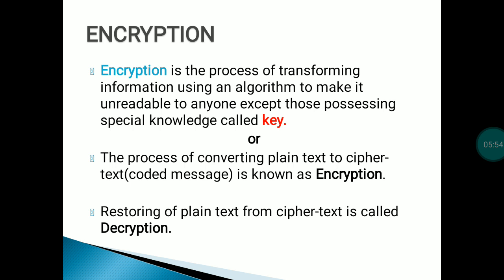The process of converting plain text to ciphertext — the coded message — is called encryption. The key is the tool through which we can convert that coded information back into normal form. Restoring plain text from ciphertext is called decryption — the reverse process of converting the coded information back into the original content.